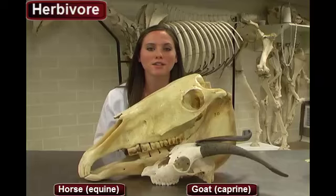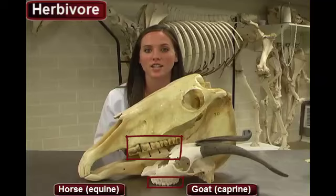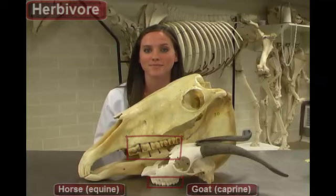In comparison with carnivores and omnivores, they have a large, rough surface area on their teeth. This helps accommodate their all-plant diet.